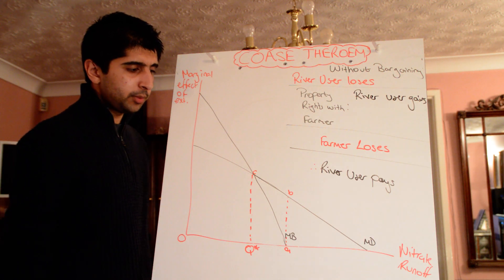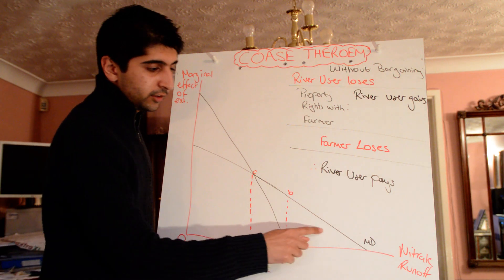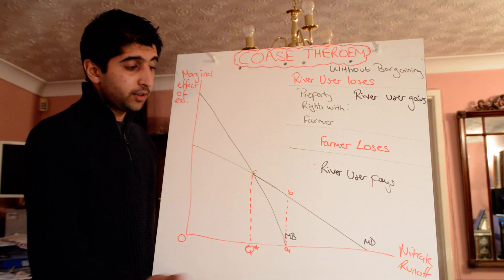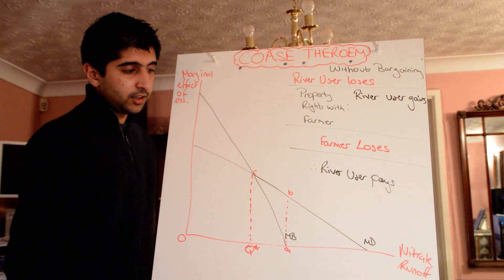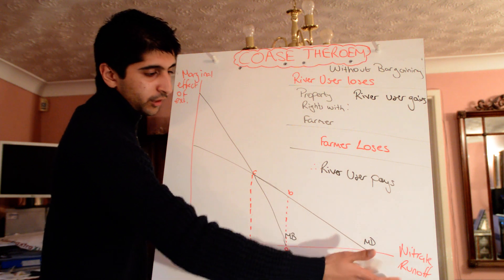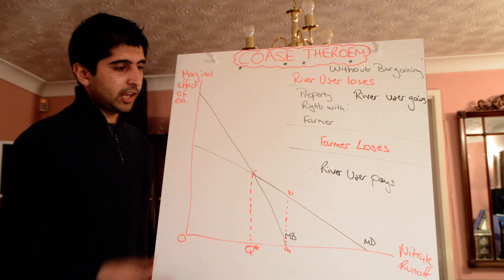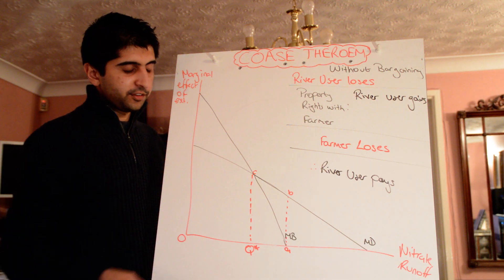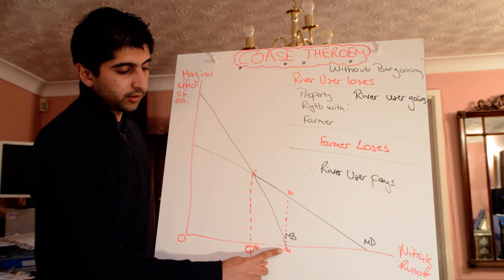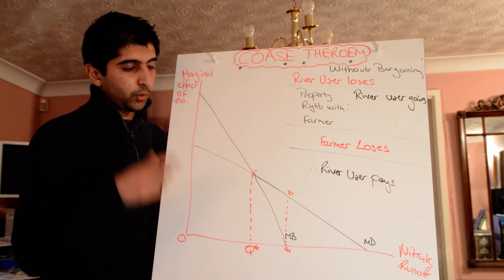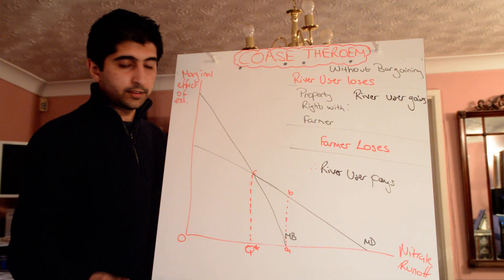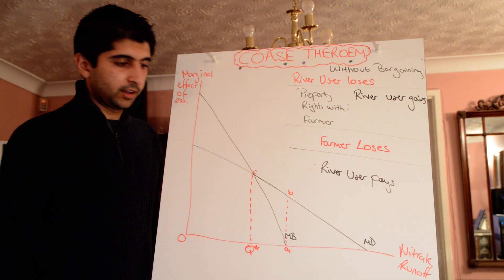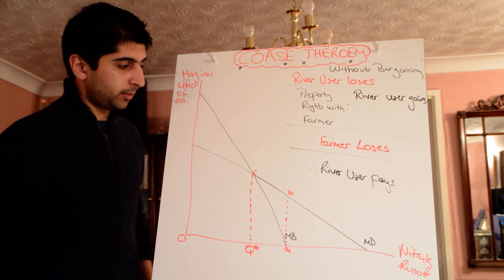The reason both curves are downward sloping is because eventually there comes a stage where we can't do any more damage to the river user — the maximum damage has been done — so using more nitrate won't have any additional effect. And for the marginal benefit curve, there comes a point — point A — where the costs of using more fertiliser are more than the benefits, which is why that curve is downward sloping as well.